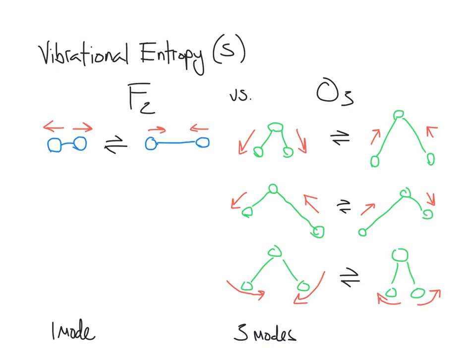Entropy is a measure of how thermal energy is dispersed within the system. Ozone has three different ways the energy can be dispersed vibrationally. Therefore, it has a higher vibrational entropy than fluorine. Again, the more complex the molecular structure, the higher the vibrational entropy.